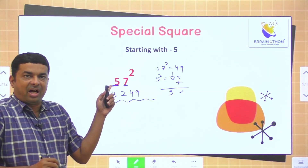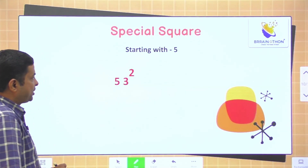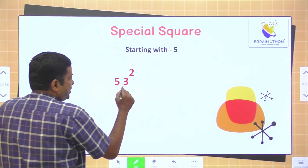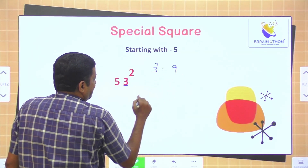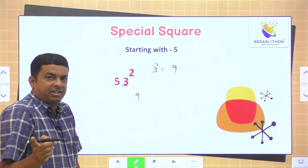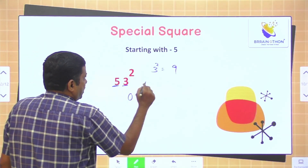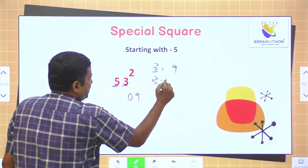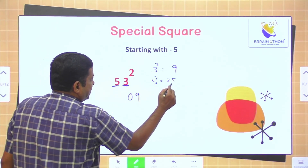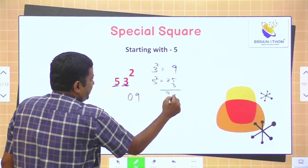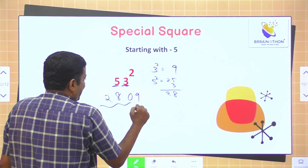When the number starts with 5 and you want to find the square, you can do it this way. One more sum: 53 square. First step: 3 square is 9. Since 9 is a single digit, we write 09 to make it 2 digits. Now find the square of 5: 5 square is 25. Add the unit digit 3: 25 plus 3 is 28. Our final answer is 2809.